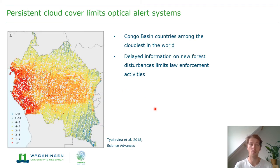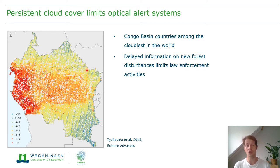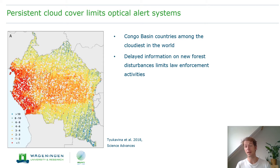Persistent cloud cover has really limited the performance of optical-based systems in the Congo Basin, leading to delayed information. Here we see the number of Landsat observations on an annual level. We can see Gabon, which is considered the cloudiest place in the world, often has one or fewer observations available per year. Other areas in the Congo Basin, such as the DRC, also have very few cloud-free observations per year, which severely limits detection performance.